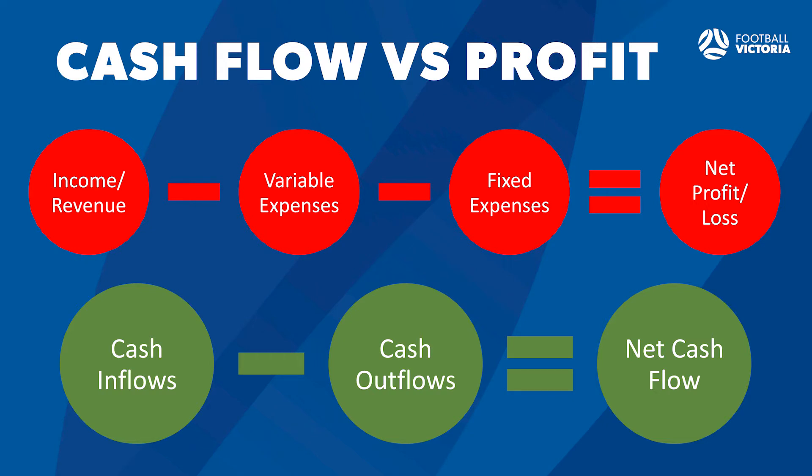A club's profit is shown as net income on the profit and loss statement. However, because of accrual accounting, net income doesn't necessarily mean that all the receivables were collected from members, sponsors, etc. From an accounting standpoint, the club might be profitable, but if the receivables become past due or uncollected, the club could run into financial problems.